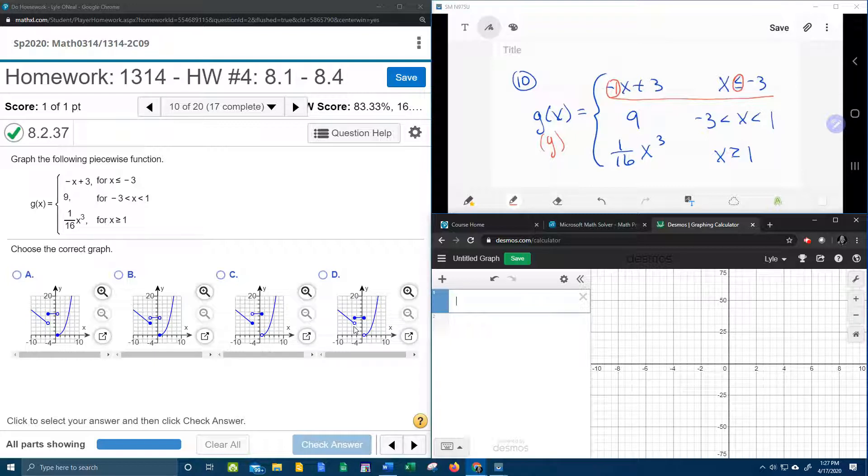Next thing I notice is that the middle piece of this function has strictly less than on each end. So that means that whatever the middle piece is, it has to be open circles on both ends. Now 9 is a constant, which means that this piece of the graph is going to be horizontal, like that. And we're looking for horizontal that ends with circles on both ends, and we can see that that's answer choice b.